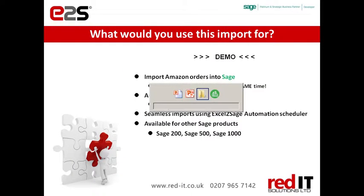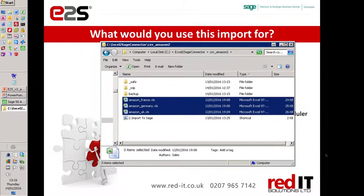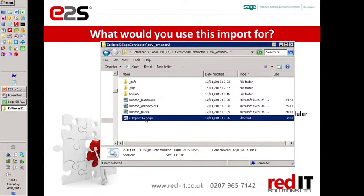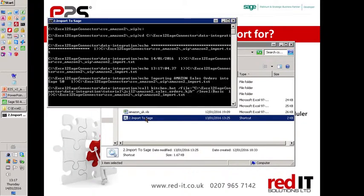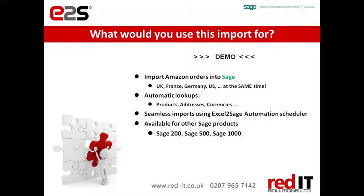So let's have a look at the demo. What I've got here in this folder are my three files from France, Germany and UK. I'm just going to kick that off. And whilst it's doing its stuff, I'll talk through what it's doing. I've taken the files from UK, France and Germany, put them into one folder, and I'm going to import them all at the same time. The system will automatically look up things like products and addresses.